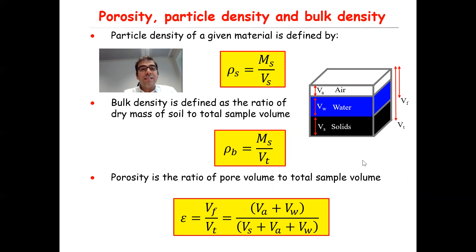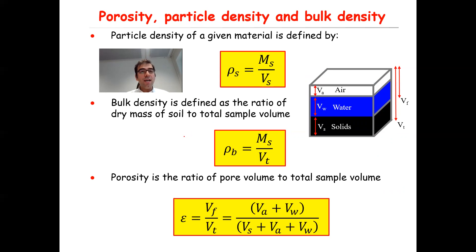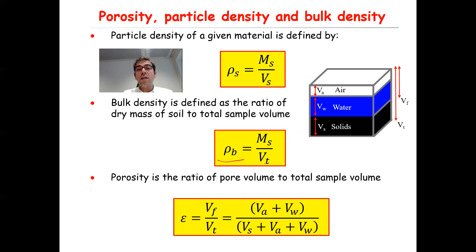Another quantity is bulk density, defined as the ratio of dry mass of soil to the total sample volume. The dry mass means if you have wet soil, you put it in the oven, you dry it, and then you measure the weight. So rho_b, the bulk density, is equal to Ms — the dry mass of soil — divided by the total volume Vt, where Vt equals Vs plus Vw plus Va.